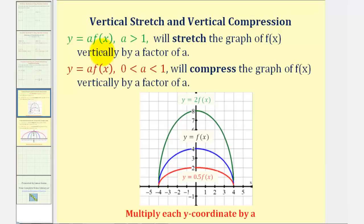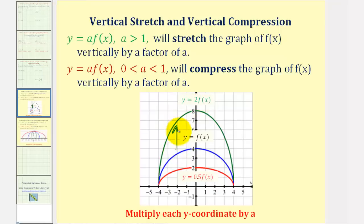Let's look at this further and consider how a would affect the graph of f of x. If a is greater than one — for example, if we had the graph of our parent function y equals f of x and then graphed y equals two times f of x — because we're multiplying the function values of the parent function by two, it would vertically stretch the function by a factor of two. To find points on two times f of x, we would multiply each y-coordinate by a, or in this case positive two.